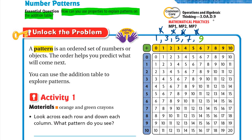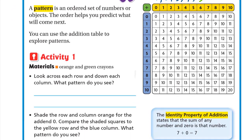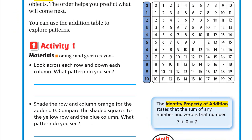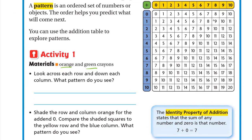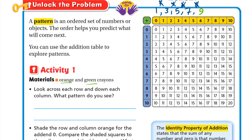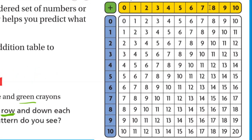You can use the addition table to explore patterns. In Activity 1, we'll need orange and green crayons. He says: look across each row and down each column — what pattern do you see? The row goes left and right, and the column goes up and down.